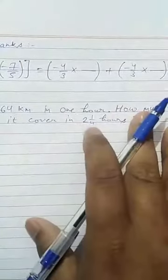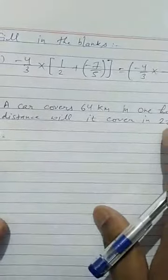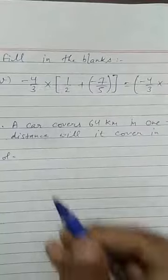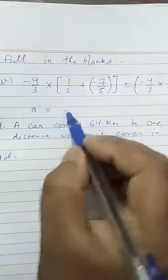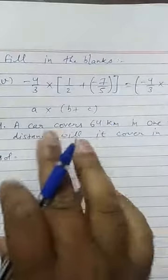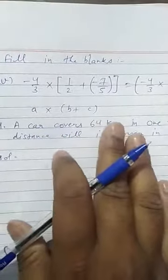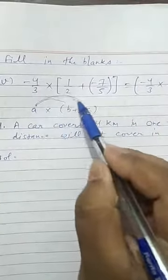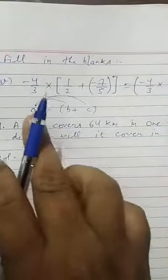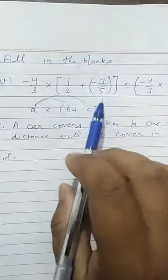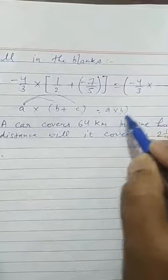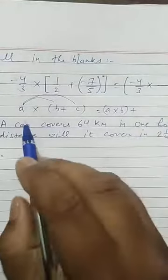It gives you the sense of distributive property of multiplication over addition. So what you have to do is you have the number A multiplied by B plus C. So according to the distributive property, what you have to do is you have to multiply A with B then put a plus sign then again A with C. So A into B, this is the value of A, 1 upon 2 is B and minus 7 upon 5 is C. So what is done? A into B gives you AB. Put a plus sign. Now A into C.